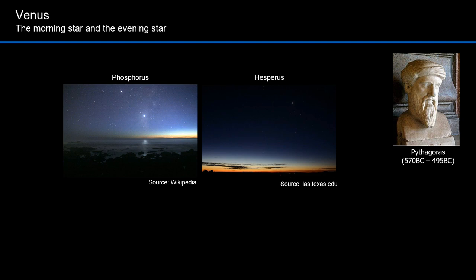While Pythagoras put this theory forward, it took thousands of years to confirm it. Many remained steadfast in their belief that Venus in the morning and Venus in the evening were two separate stars.